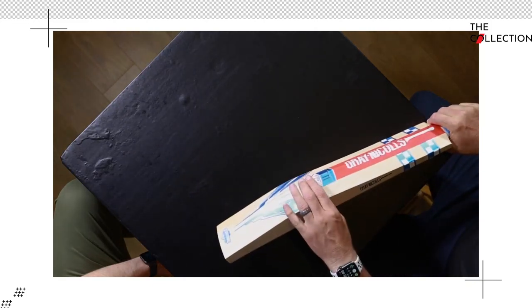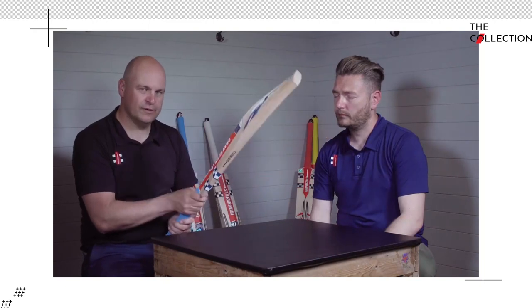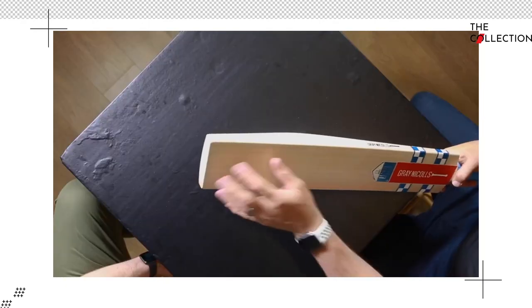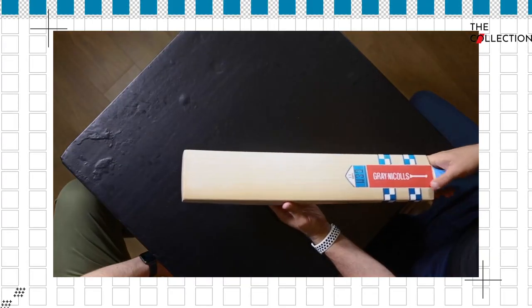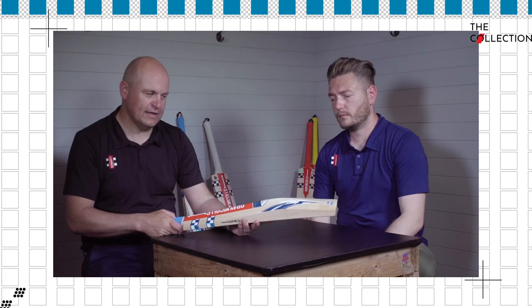The mid to high middle really helps that pickup so we can get a lot of wood in a lightweight pickup. The square toe is a modern feature a lot of the professional players in the game choose. It just makes them feel like the bat looks a lot wider.